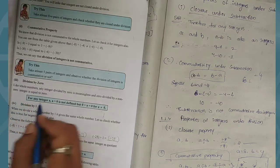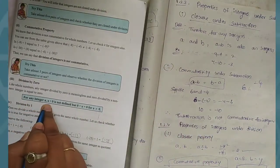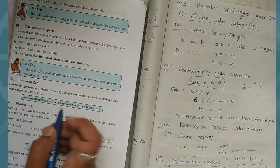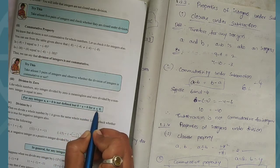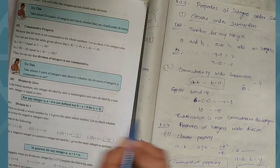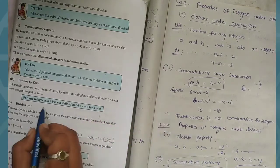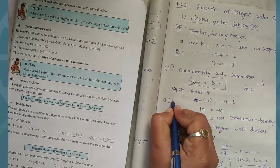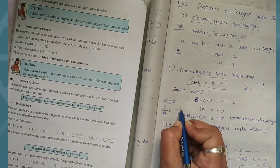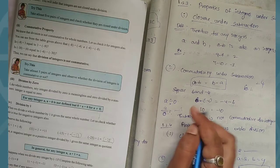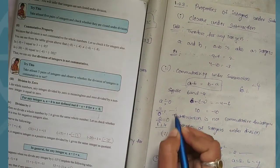Division by 0: for any integer a, a divided by 0 is not defined — the answer is infinity. But 0 divided by a equals 0, provided a is not equal to 0. So a divided by 0 is not defined, and 0 divided by a equals 0.